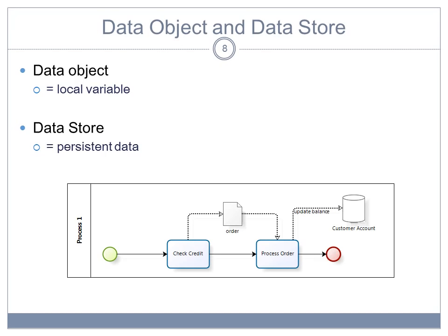So you see the order as a local data object that is the output of check credit and is passed on to process order task. The process order task will update the balance in the persistent store that contains customer account information.